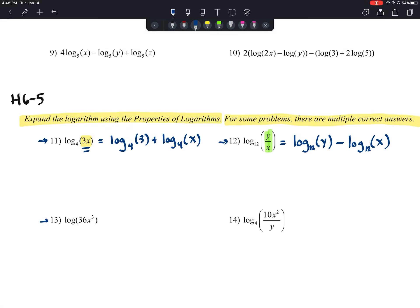Looking at 13, we have the log of 36x to the third power. Since we have the product inside our parentheses, we'll start out by saying this is the same thing as the log of 36 plus the log of x to the third.